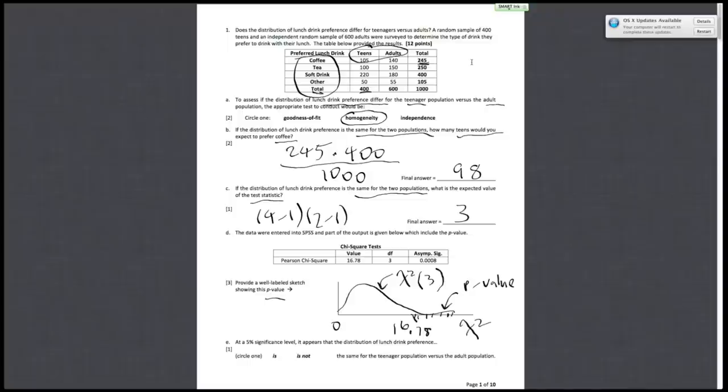Finally, at the 5% significance level, we want to evaluate whether or not our p-value of 0.0008 means we should reject our null hypothesis that the preferences are the same. At the 5% significance level, it does appear we should reject since our p-value is less than 0.05.